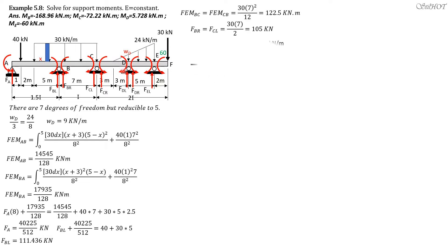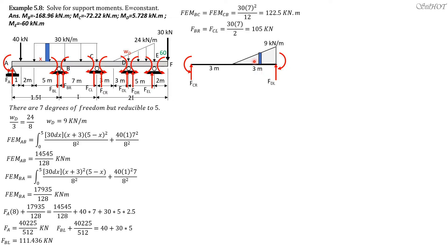For portion CD, the equivalent distributed load WD is 9 kilonewtons per meter. The length of the strip, calling the distance x, is 9 divided by 3, giving intensity 3x. Fixed end moment CD is the integral of 3x dx times (3 plus x) times (3 minus x) squared over 6 squared.